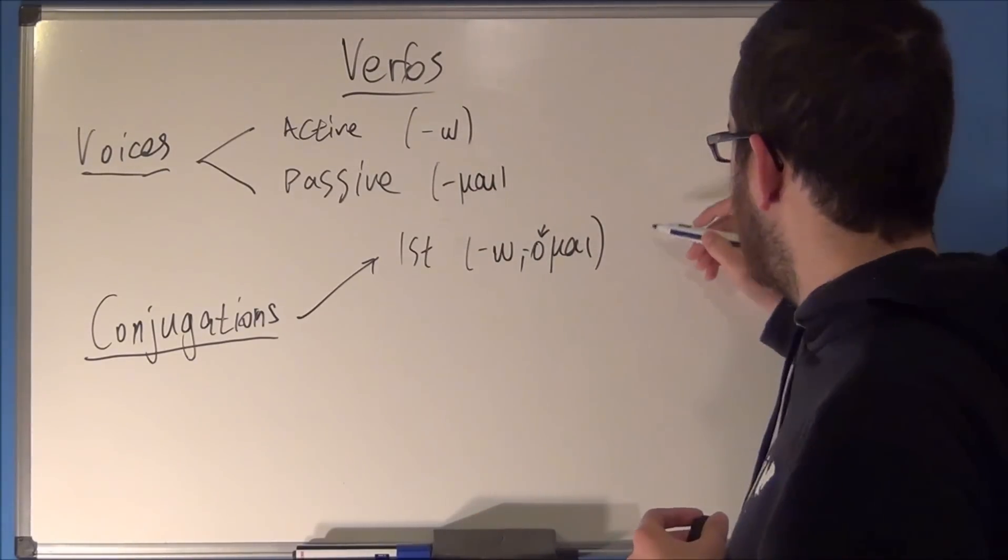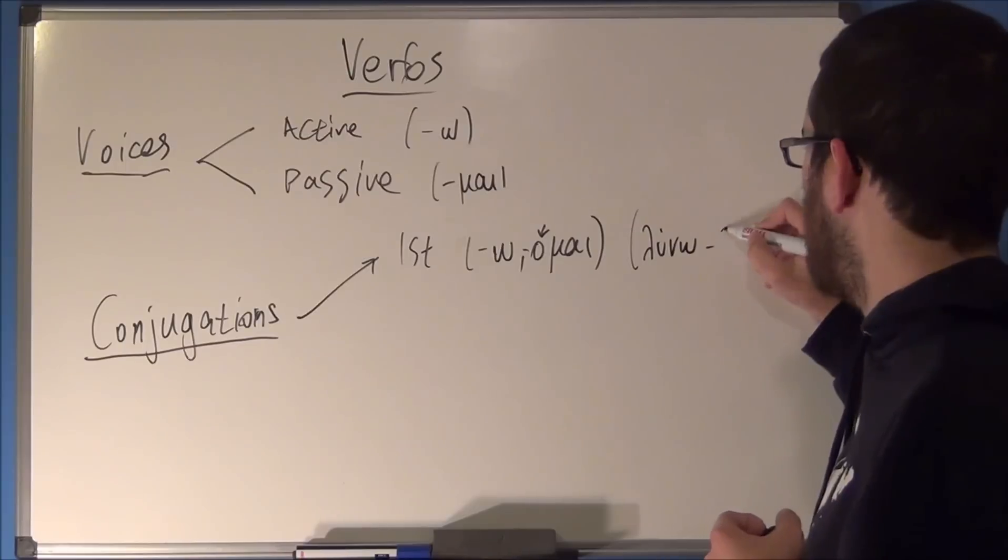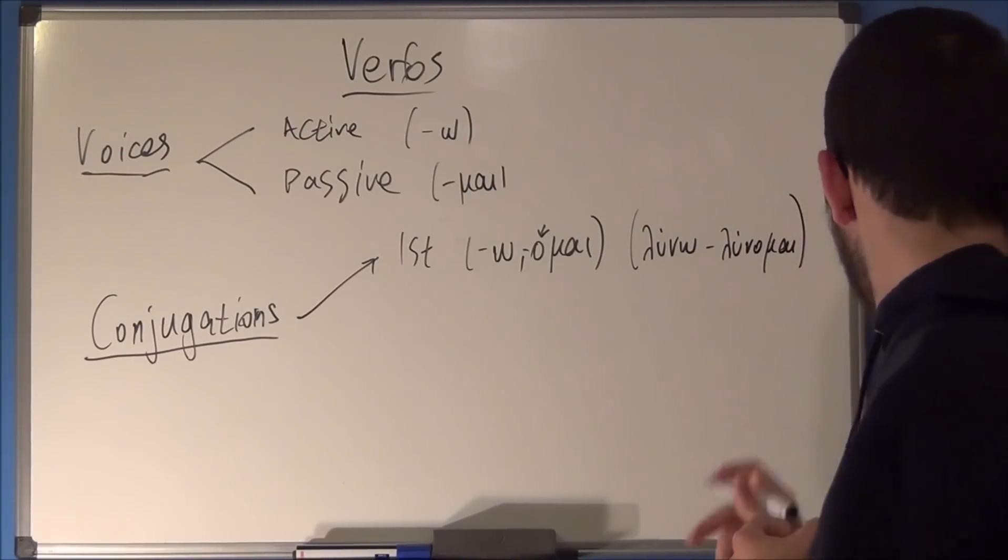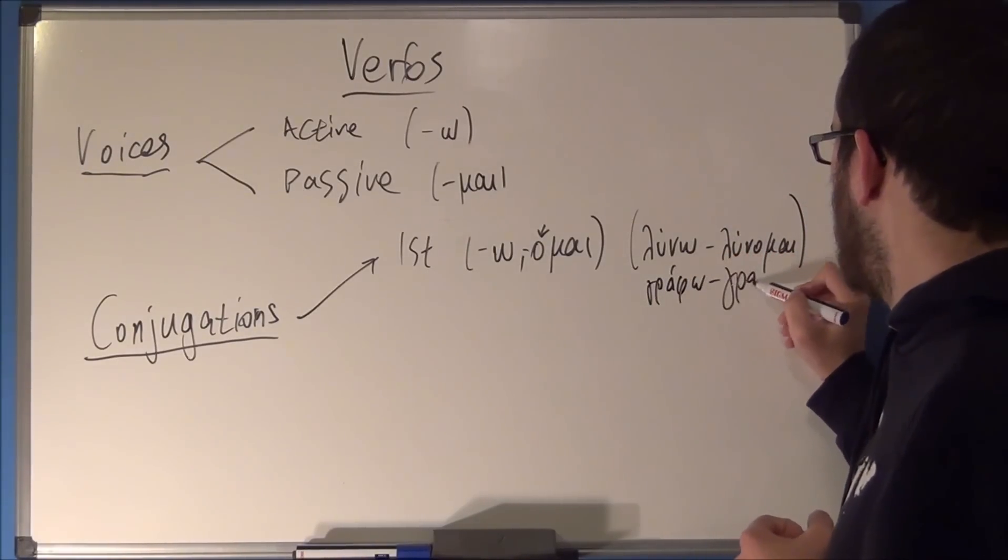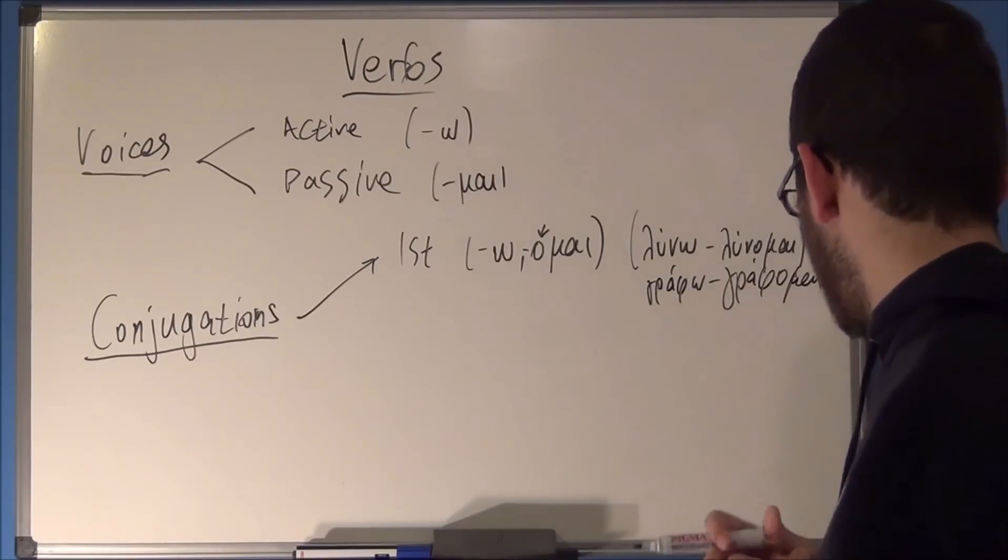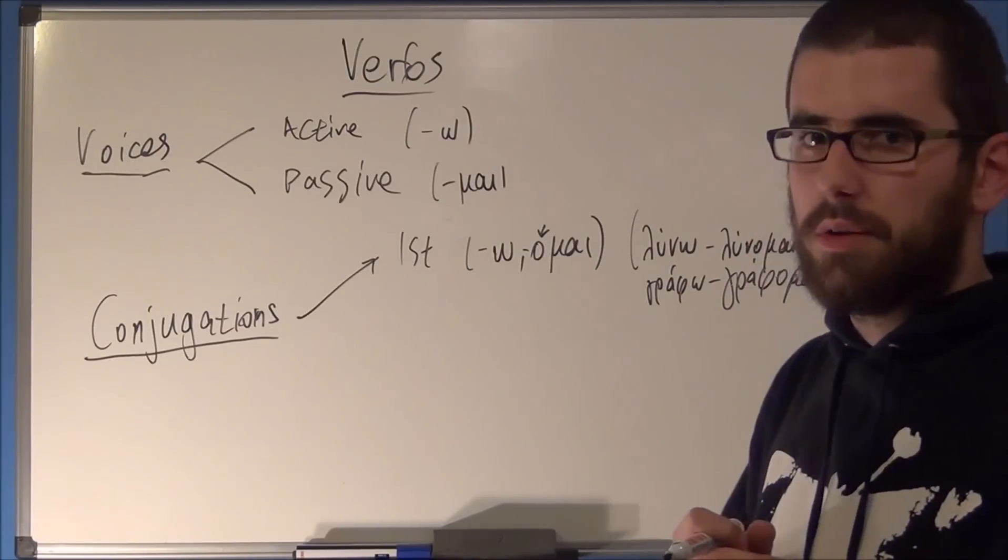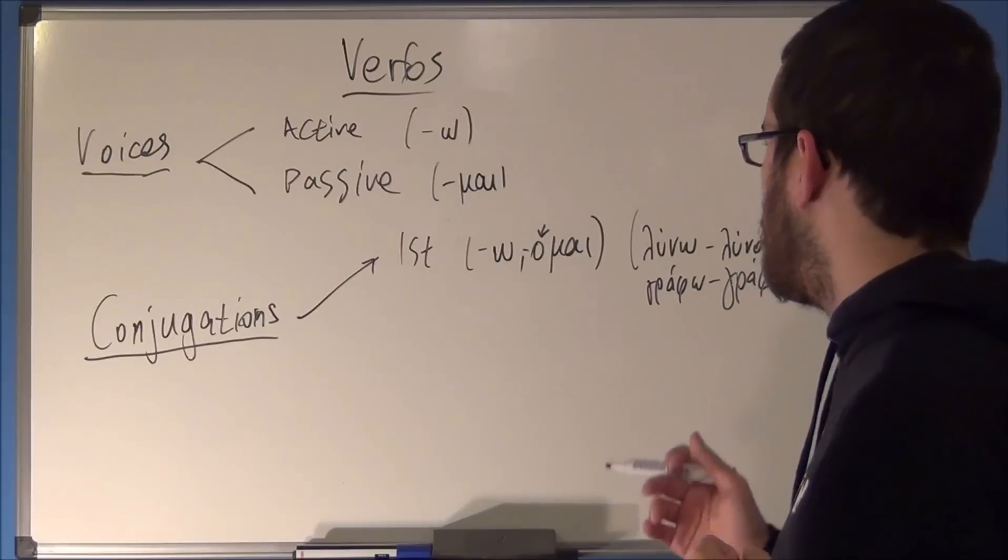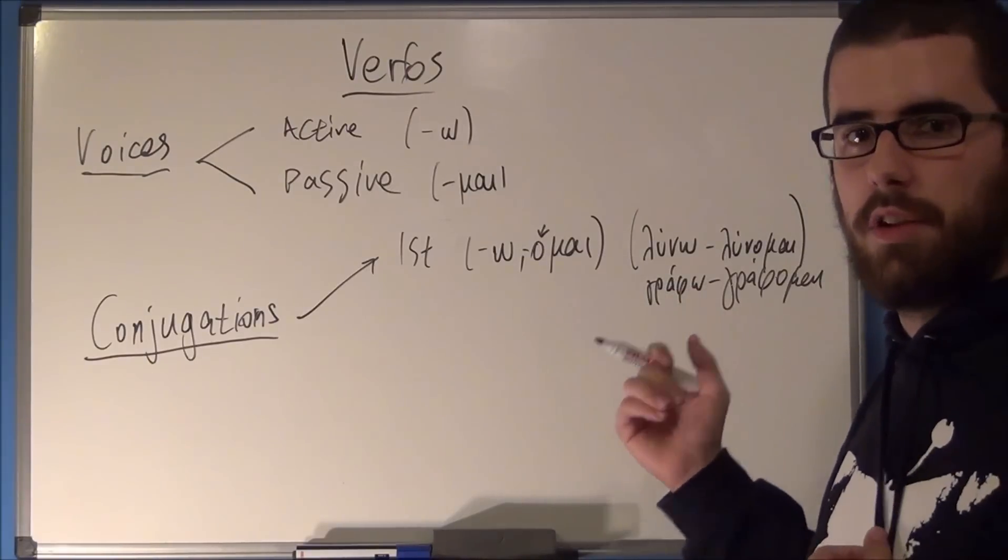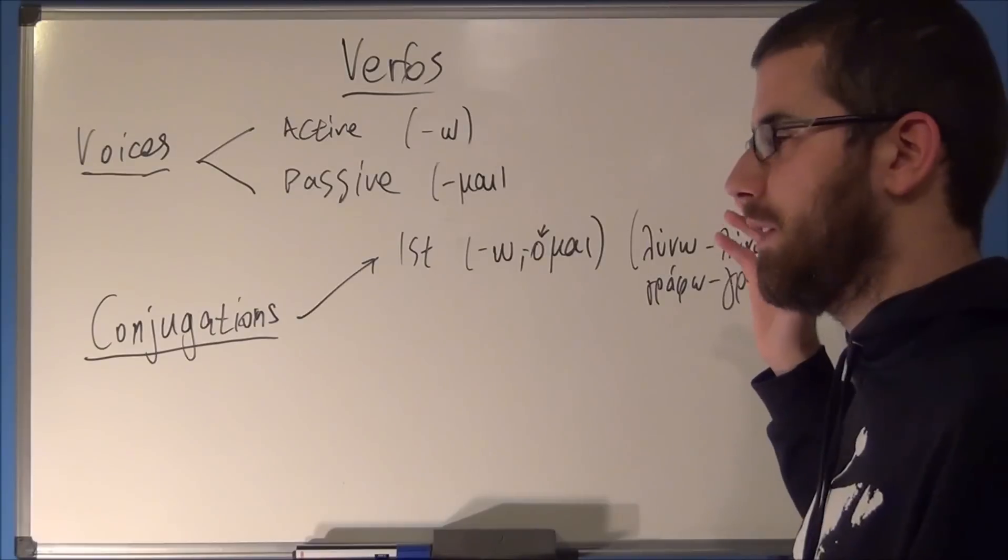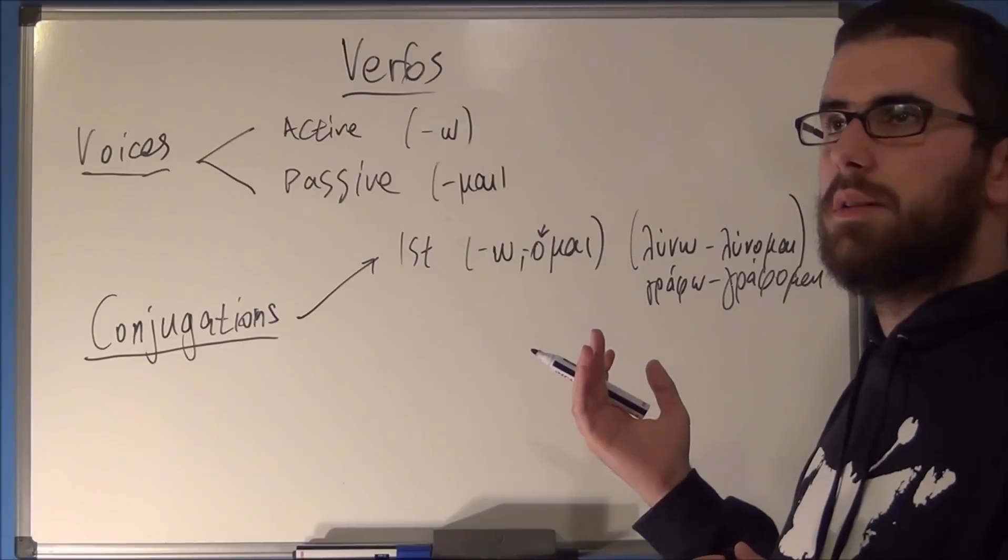Some fine examples are LINO, which is to solve, to untie and so on, and LINOME, which is the passive voice form. And there are a few more, like GRAPHO, GRAPHOME, and so on. Generally, you have to remember that in the first conjugation, you can only find verbs that have their accent in the penultimate syllable.